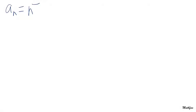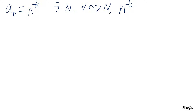Now let's look at a different way of calculating the limit of the nth root of n. In the second method, let's call a_n = n to the power of 1/n. We are going to prove that when n is big enough, this sequence is eventually decreasing. In other words, we want to find a constant N such that for n greater than N, n^(1/n) is greater than (n+1)^(1/(n+1)).